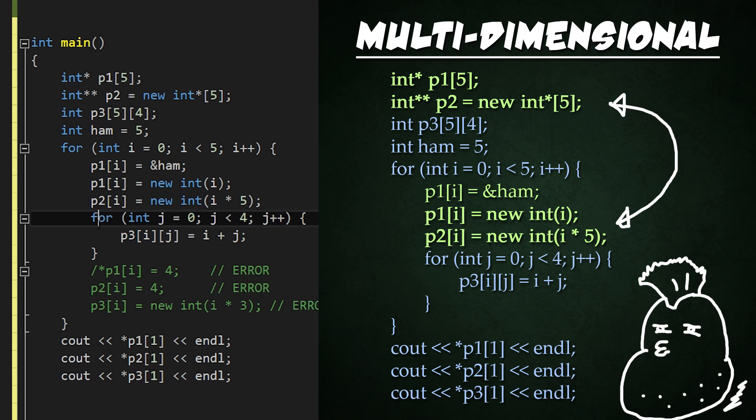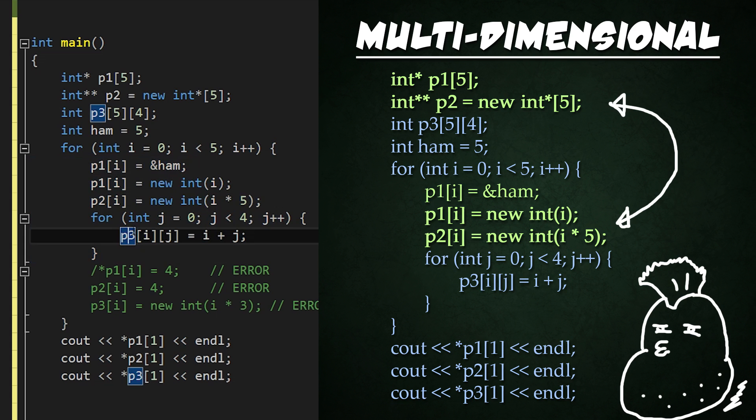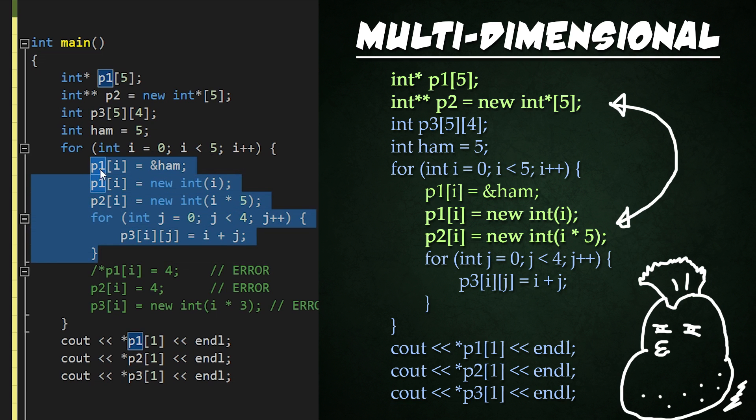Finally, we're going to go ahead and loop through zero through four, because we have pointer three set to dimensions of five and four. And we're going to go ahead and set those to just simple additions of the values i and j. So this was some of the correct ways that you could use to set the values of a dynamic array or just regular dimensional arrays. So now what I'm going to do is I'm going to go ahead and comment that out and show you some of the incorrect ways.